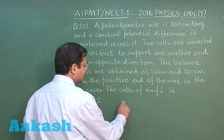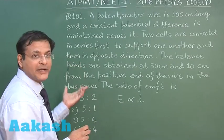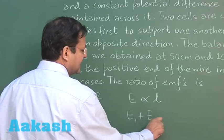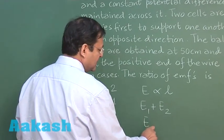You know that EMF is proportional to length. So in the beginning if it is supporting, that means E1 plus E2 is given to you, and later on in case they are opposing, that means E1 minus E2 will be given to you.